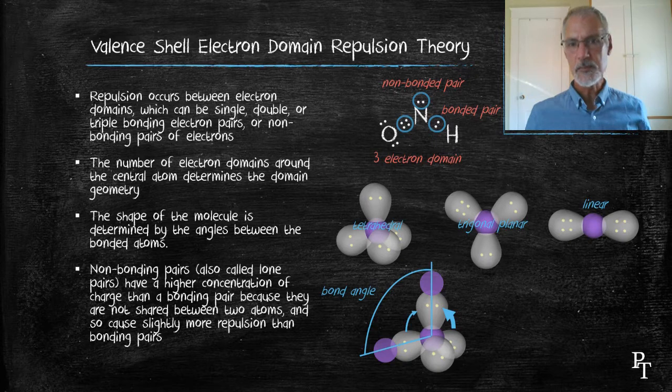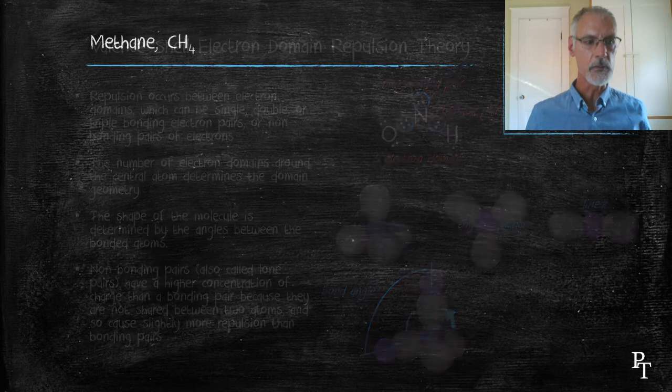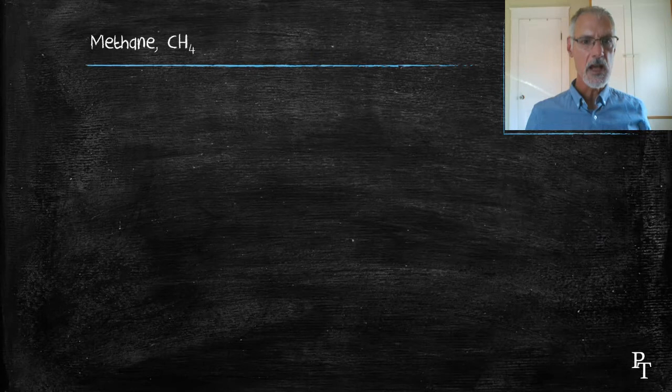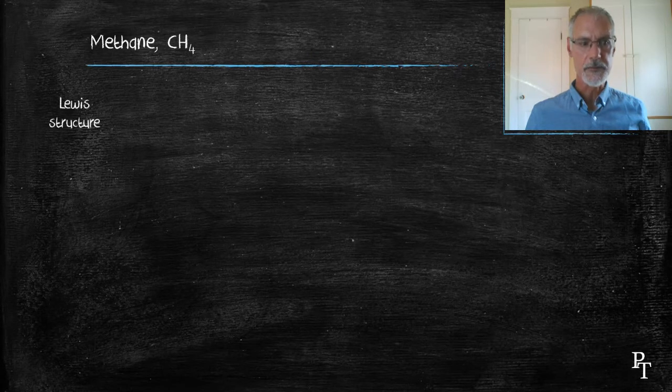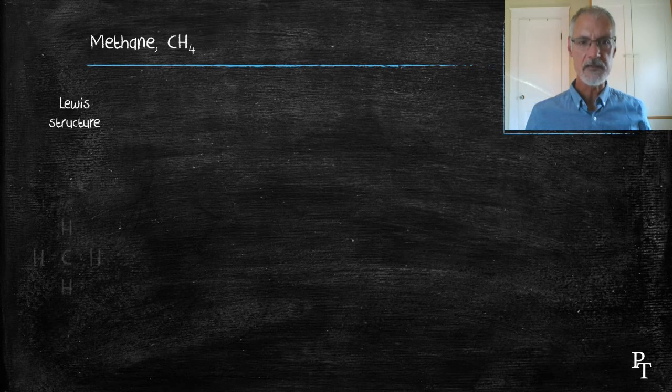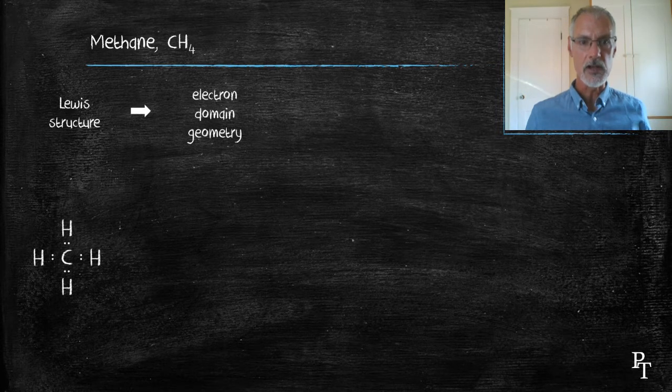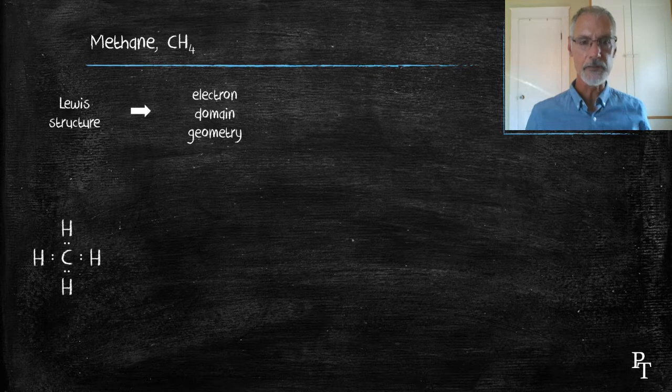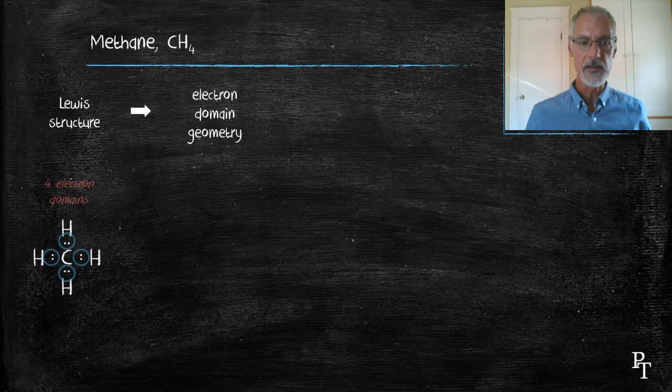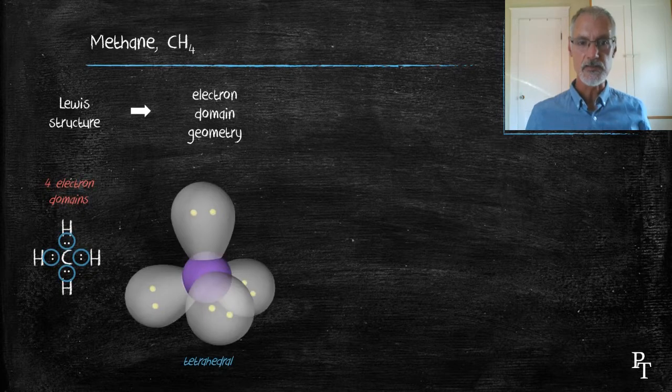Let's apply these principles to several molecules. I'll begin with the simplest one, methane. I always begin with the Lewis dot structure. From that, I can identify the initial geometry. That geometry is dictated by the number of regions of electrons or electron domains around that central atom. In this case, there's four electron domains. That means my electron domain geometry is a tetrahedral.